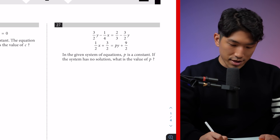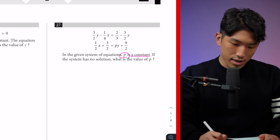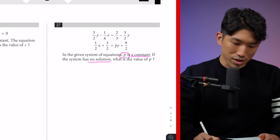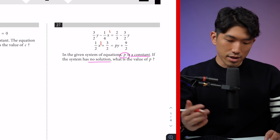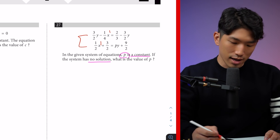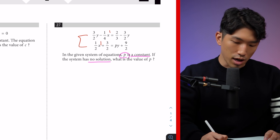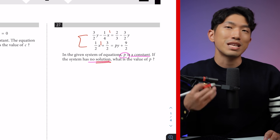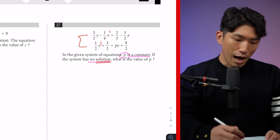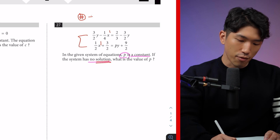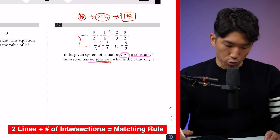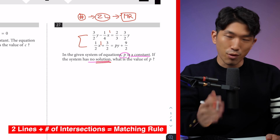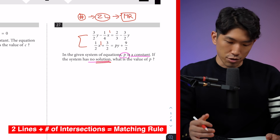The question says: in the given system of equations, p is a constant. If the system has no solution, what's the value of p? In the system, we have two lines because all the x's are to the first power. On the SAT, when you are given two lines and it's asking for the number of solutions, it's asking for the number of intersections. How do we find the number of intersections for two lines? We use something known as the matching rule.